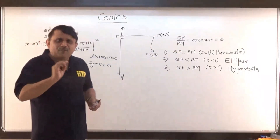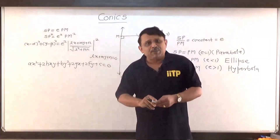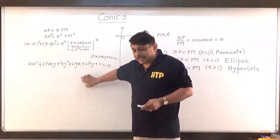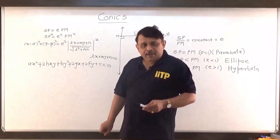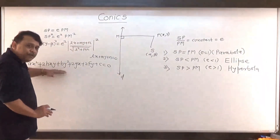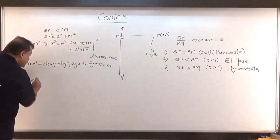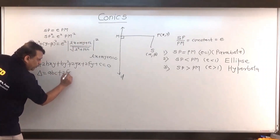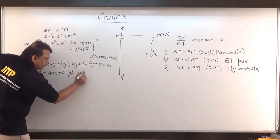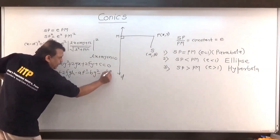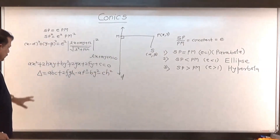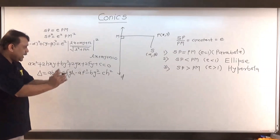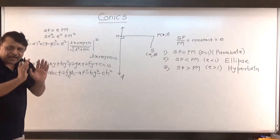We know from the study of pair of lines that whenever ax² + 2hxy + by² + 2gx + 2fy + c = 0 represents a pair of lines, the discriminant of this equation is 0. The discriminant is given by: Δ = abc + 2fgh − af² − bg² − ch². You have to remember this. Δ equals abc plus 2fgh minus af² minus bg² minus ch².